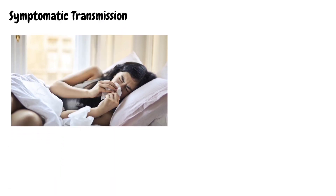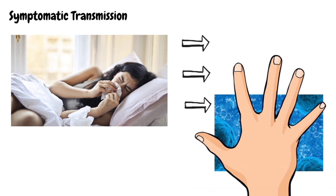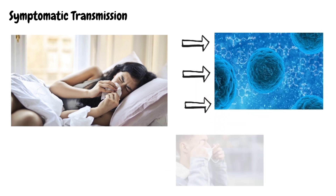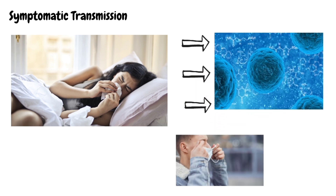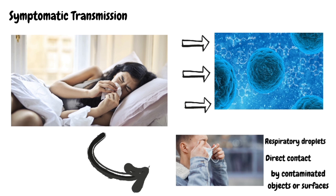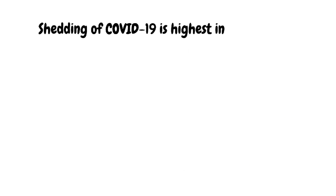Symptomatic transmission: a symptomatic COVID-19 case is a case who has developed signs and symptoms. Transmission refers to transmission from a person while they are experiencing the symptoms. It can happen by respiratory droplets, by direct contact, or by contaminated objects and surfaces.